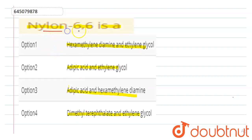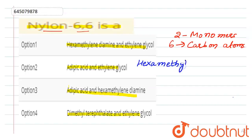So Nylon-6,6 is made of two monomers, each monomer containing six carbon atoms. So its monomers are hexamethylenediamine and adipic acid.